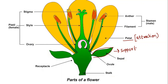Here, as you can see, this big structure is the ovary — the female reproductive part. In the case of a flower, it is known as the pistil. The pistil is divided into three categories: stigma, style, and ovary.